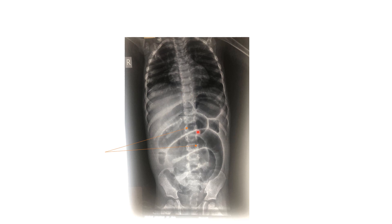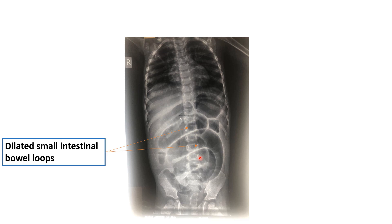This abdominal X-ray was taken in the lying down position. Ideally, for intestinal obstruction, we should take the X-ray in upright or standing position. The abnormal radiological finding here is dilated intestinal bowel loops present in the center of the abdomen. Characteristically, the mucosal folds are present throughout the circumference of these bowel loops — these are dilated small intestine bowel loops, suggestive of small intestinal obstruction.